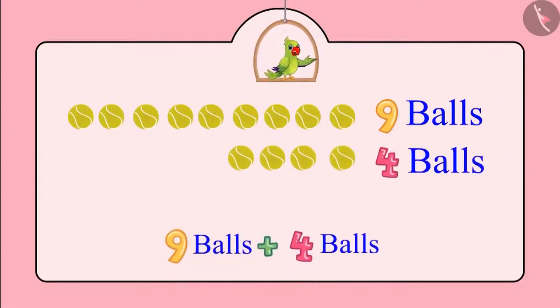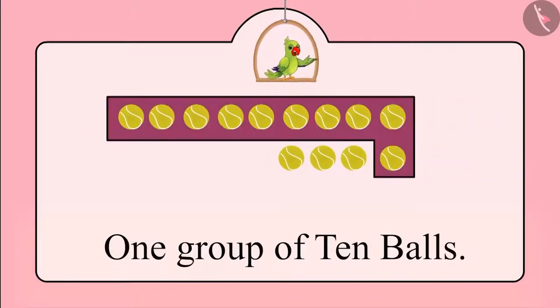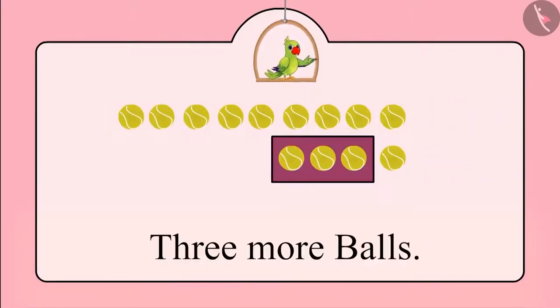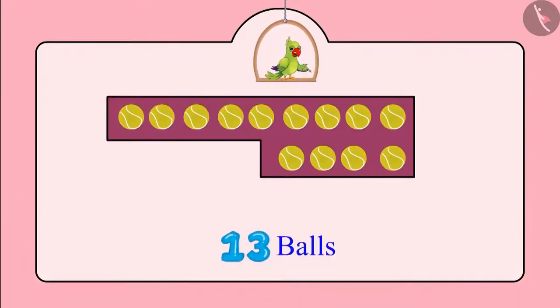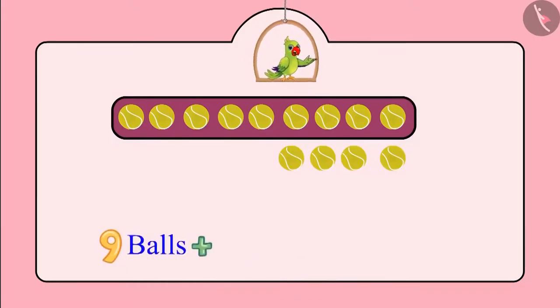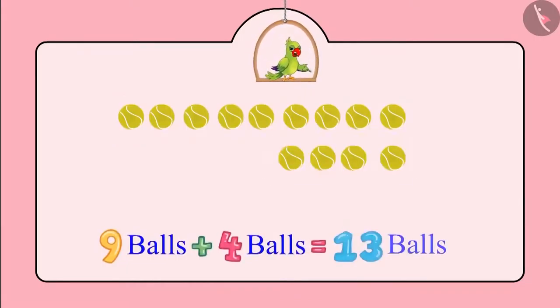This means that all the balls together make a group of 10 balls and three more balls. This means there are a total of 13 balls. So children, nine balls added to four more balls make a total of 13 balls.